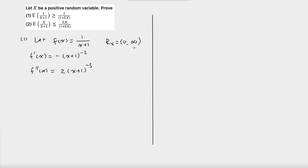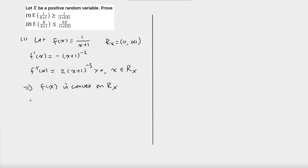Since x is a positive number, the second order derivative of f must be greater than zero when x is in the range of x. Because the second order derivative is greater than zero on the range of x, that means f(x) is convex on the range of x. So we can apply Jensen's inequality.